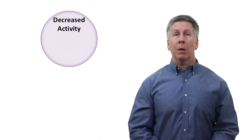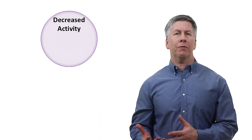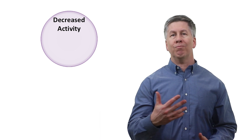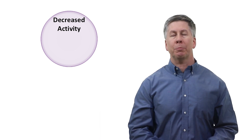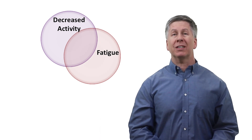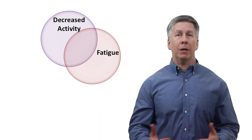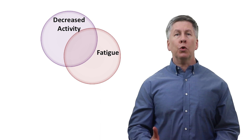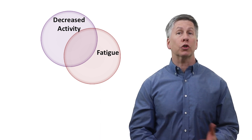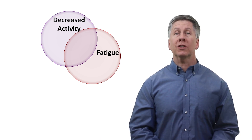Decreased activity, meaning the individual is doing less than they used to — going out of their home less often, or if they live in an assisted living facility, leaving their room less often and eating in rather than in shared spaces. Next is fatigue, sometimes described as decreased energy. This sometimes manifests as decreased tolerance of activity, such that they are fine moving around their room but can't muster the energy to go to the grocery store or a doctor's appointment. It is distinct from objective muscle weakness or shortness of breath with exertion.